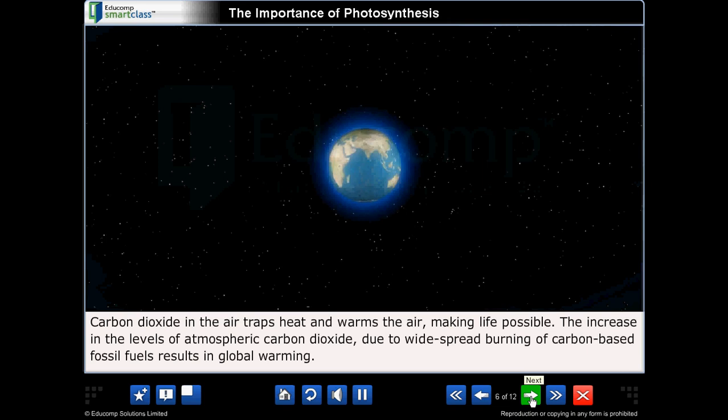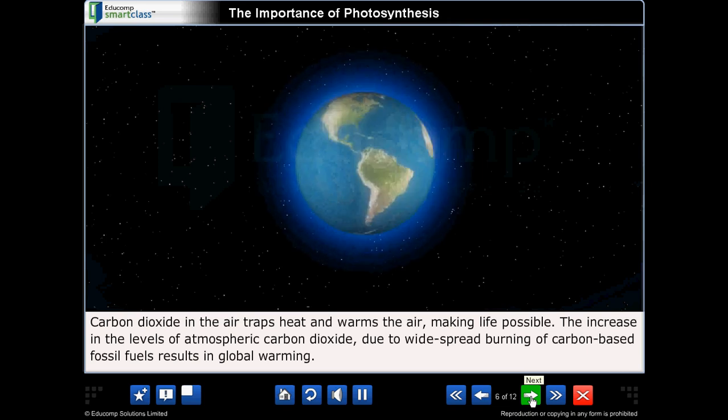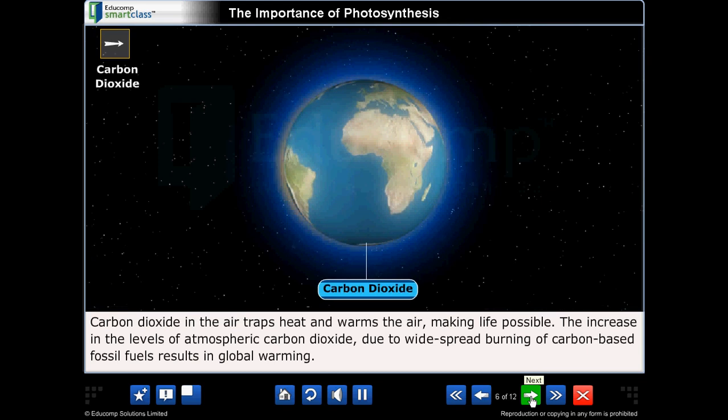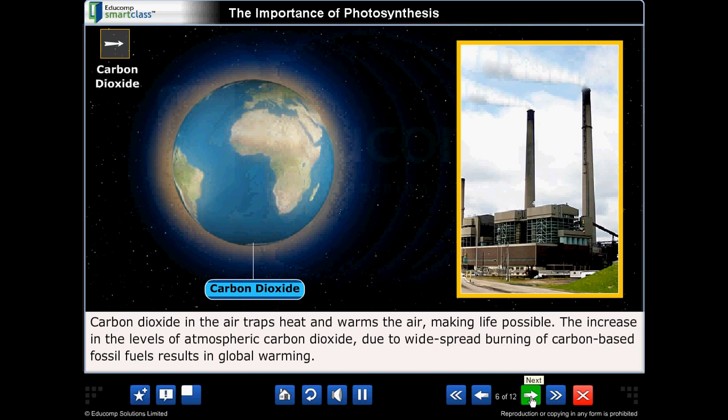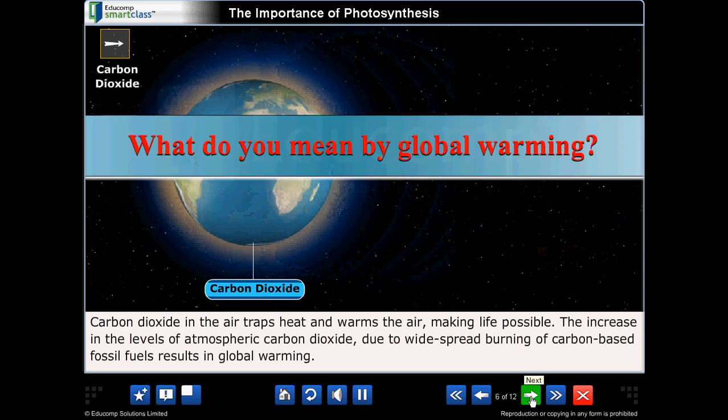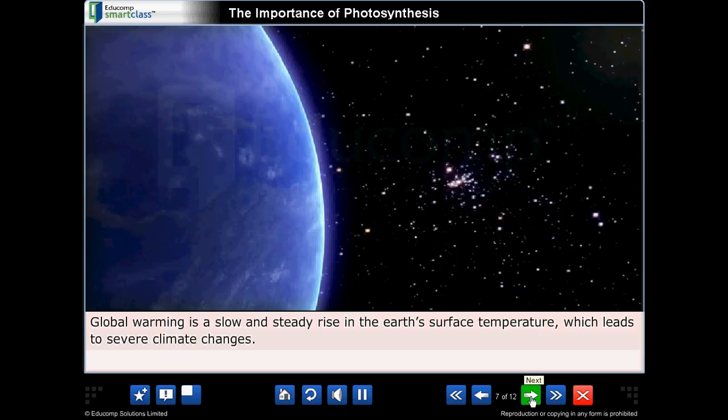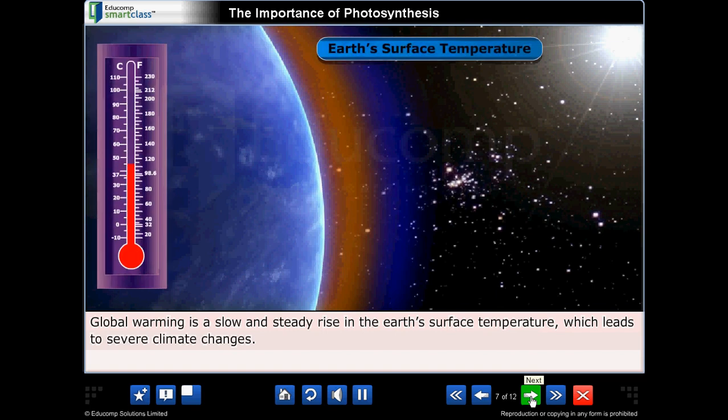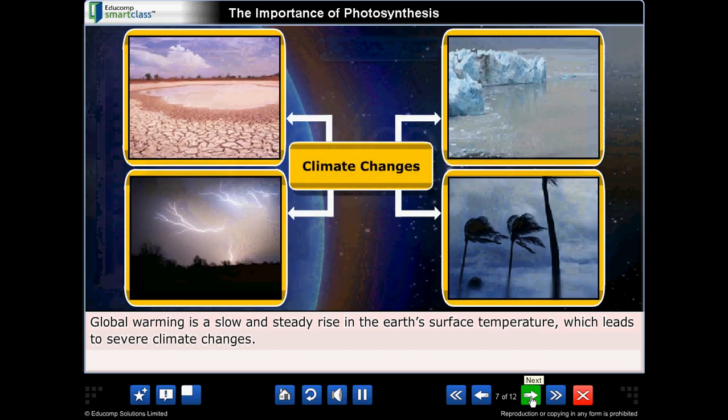Carbon dioxide in the air traps heat and warms the air making life possible. The increase in the levels of atmospheric carbon dioxide due to widespread burning of carbon-based fossil fuels results in global warming. What do you mean by global warming? Global warming is a slow and steady rise in the earth's surface temperature which leads to severe climate changes.